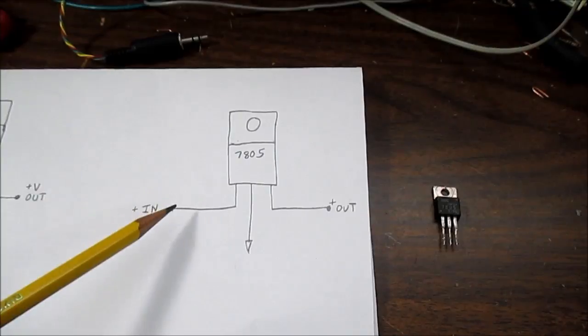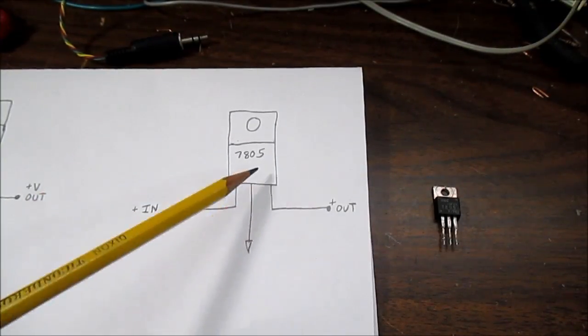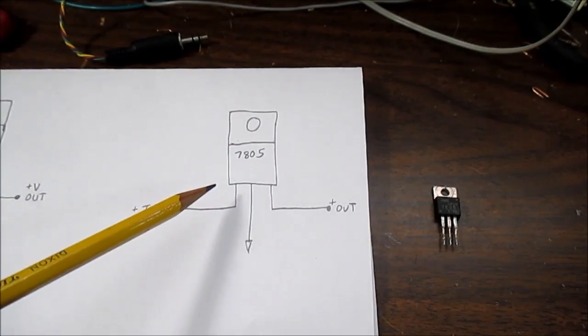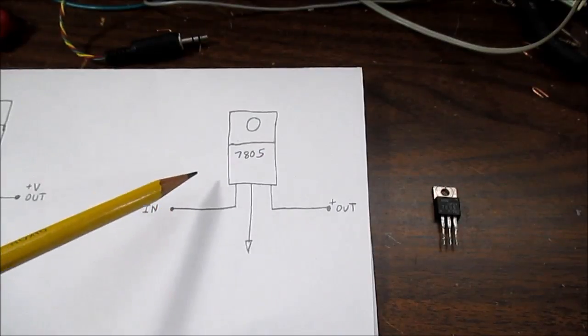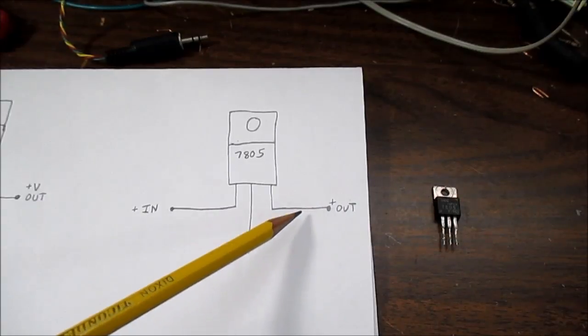The input voltage is usually around 2.5 volts higher than the output voltage because you have to follow its minimum dropout rating. Because if you go below that, the voltage stops being regulated and then it starts to drop.